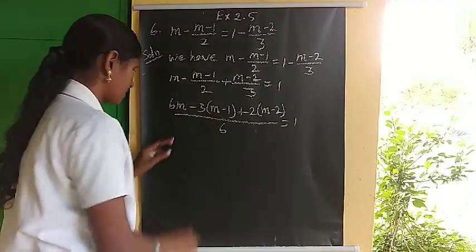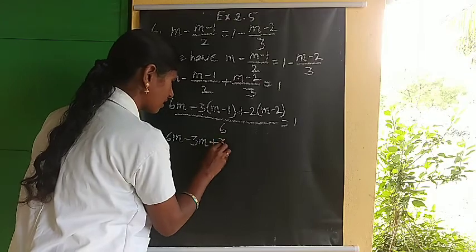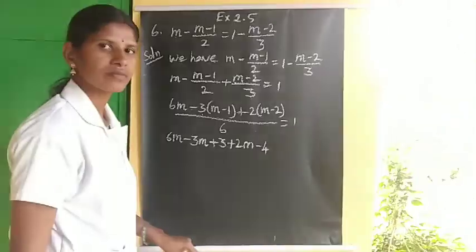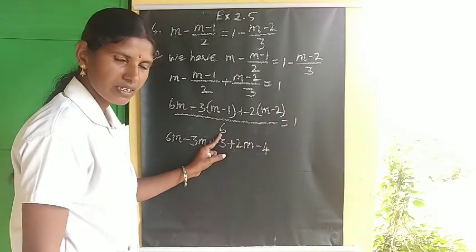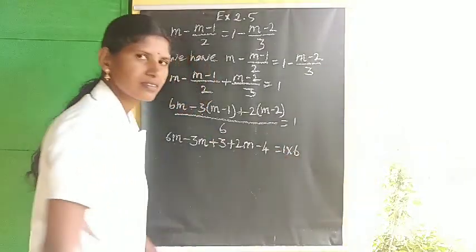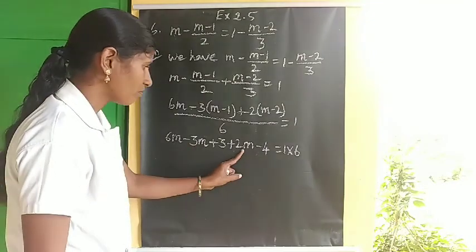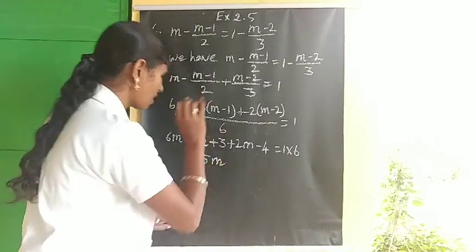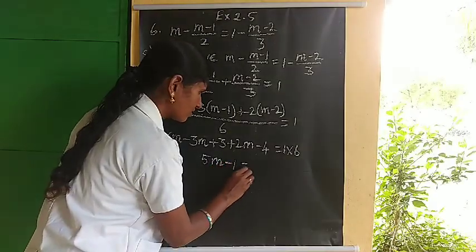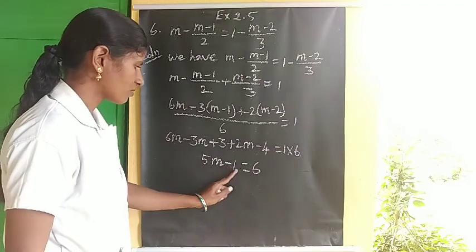The 6 transfers to RHS: simplifying M terms gives 6M minus 3M plus 2M equals 5M. Constants: 3 minus 4 equals minus 1. So 5M minus 1 equals 1 times 6, which is 6. Therefore 5M minus 1 equals 6, and 5M equals 6 plus 1 equals 7.